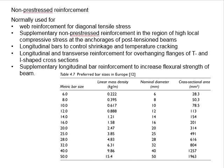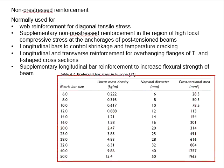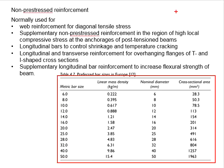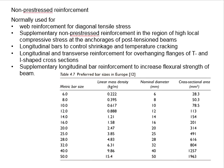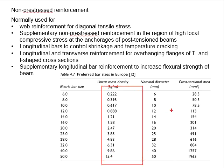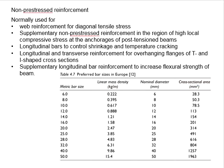High yield steel bars are used as longitudinal bars and stirrups. The table here shows the common different sizes of non-pre-stressing steel bars, ranging from 6 mm to 50 mm, with the density and cross-sectional area of different sizes provided.